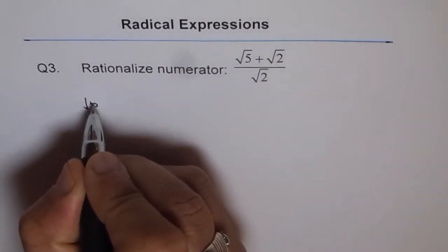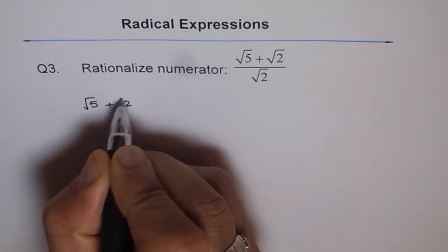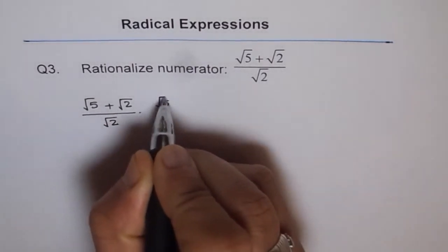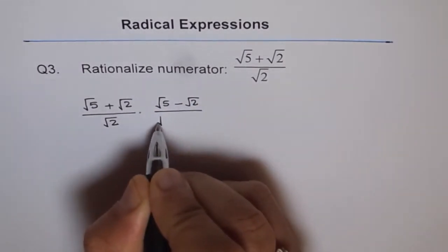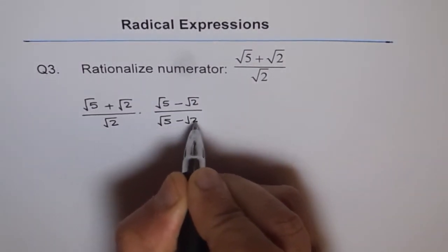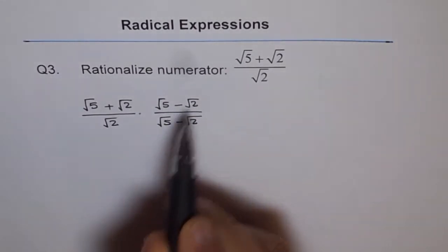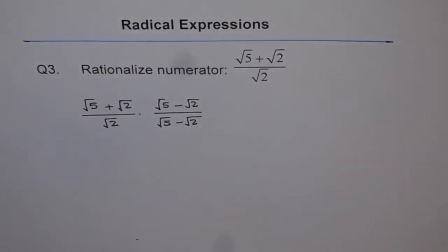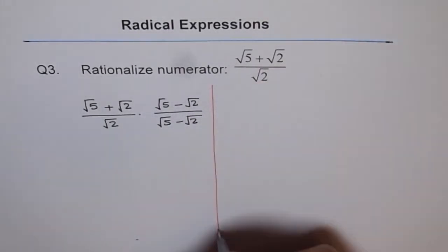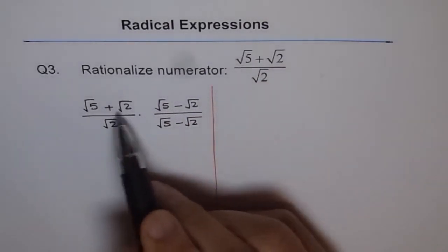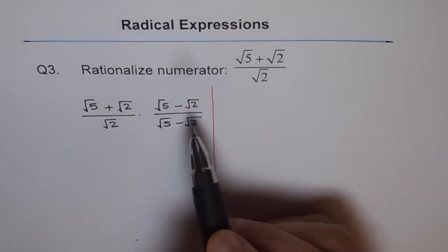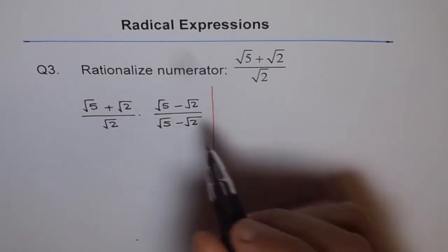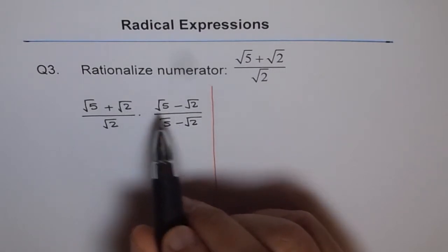We can write this expression as square root 5 plus square root 2, divided by square root 2, times square root 5 minus square root 2. Square root 5 minus square root 2 is the conjugate of square root 5 plus square root 2. We do this to get rid of radicals from the numerator — rationalizing means multiplying by a term so that you can write the expression as integer ratios, converting radicals into integers.